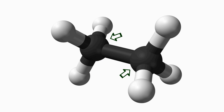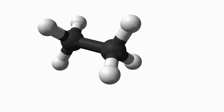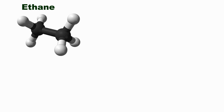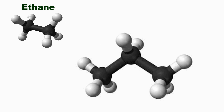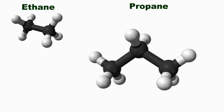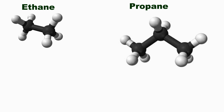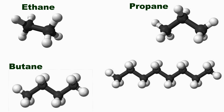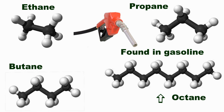Now if you take two carbon atoms bound together, you've made what's known as ethane. If you add another carbon atom, you've created propane. Add another carbon atom, you've created butane. So if we jump up to an eight-carbon chain, we have what's known as octane.